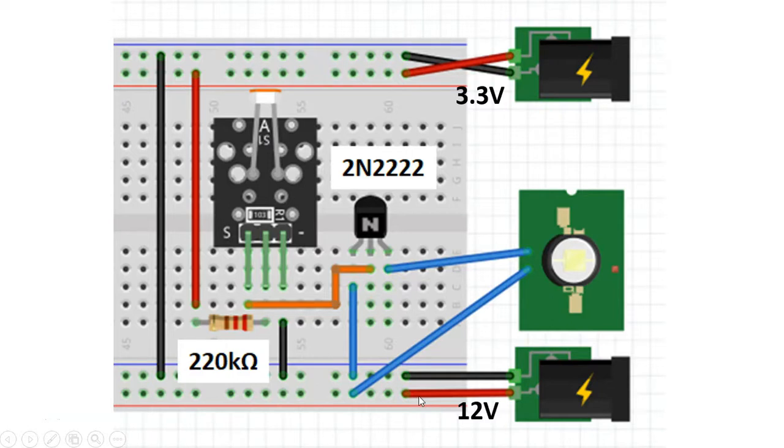So here we have the 12 volt power supply. We got here the positive terminal going to the LED, then that going through the transistor, exiting here and coming to ground. And then if we look at the 3.3 volt, we have here the positive terminal which then comes here, then going through the 220 kilo ohm resistor, which then lands in the LDR, which of course internally has its own 10 kilo ohm resistor in the LDR itself.